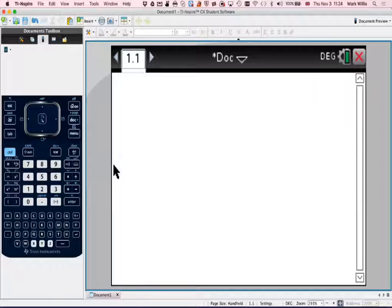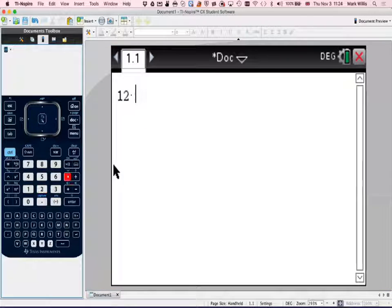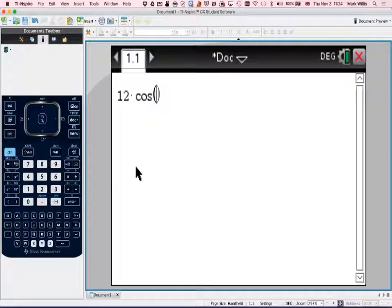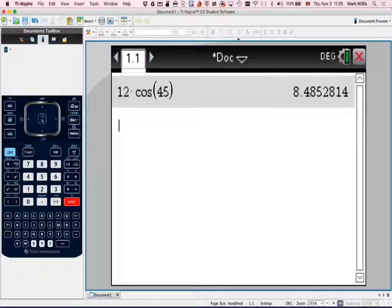So I need to do 12 times trig, which is this one here, cos of 45, 45. And then press enter, and I'm going to get an answer of 8.485.